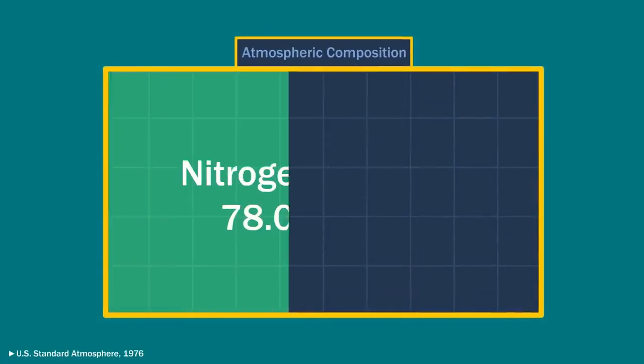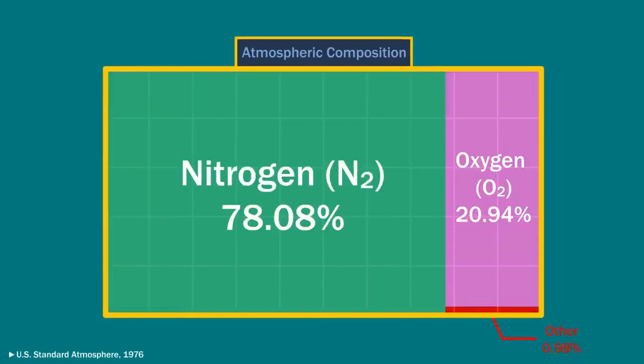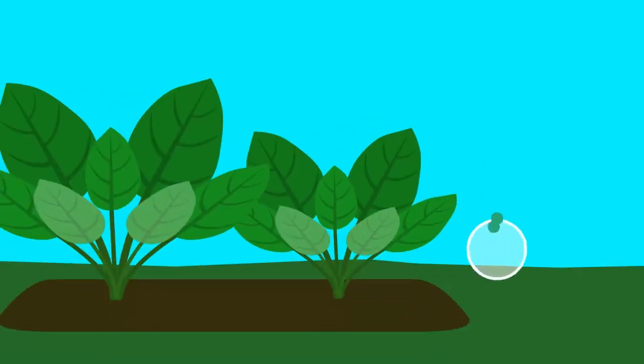Nitrogen makes up 78% of the Earth's atmosphere by volume. But most of this nitrogen takes the form of two nitrogen atoms strongly bonded together, which isn't very reactive and is useless to plants.